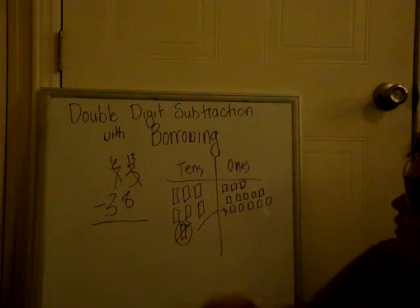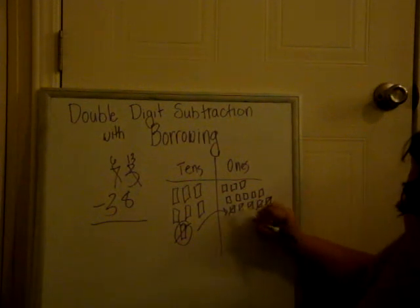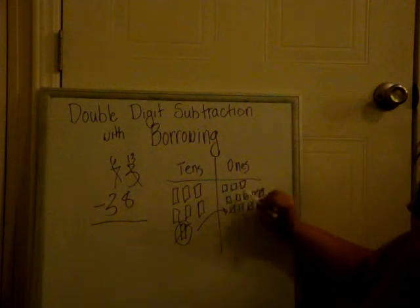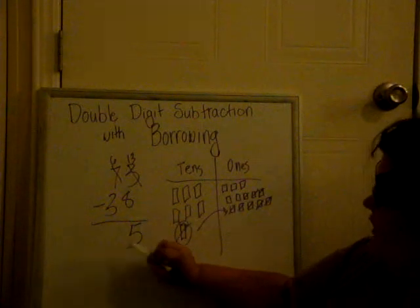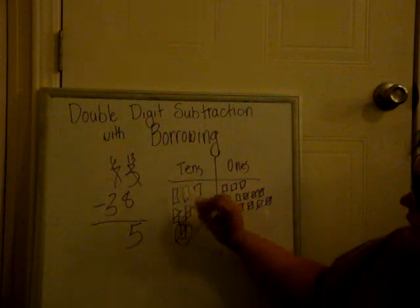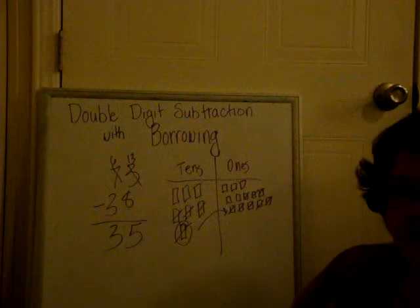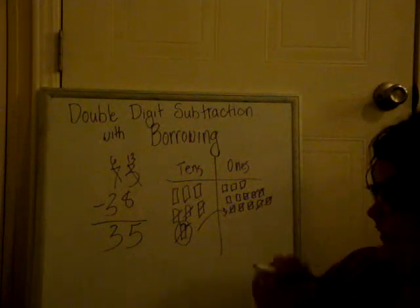And we just do our subtraction just like normal. So 13 minus 8, counting through 8, leaves us with 5 left over. And then we do our 6 minus our 3, counting 1, 2, 3, leaves us with 3 left over. And that's 35. So 73 minus 38 equals 35.